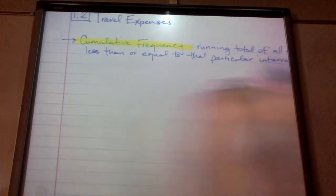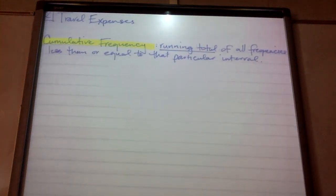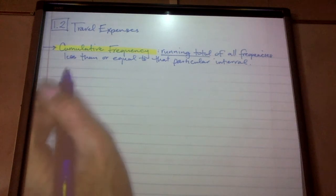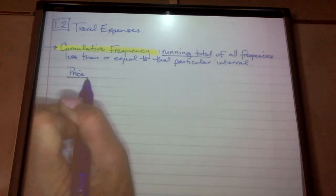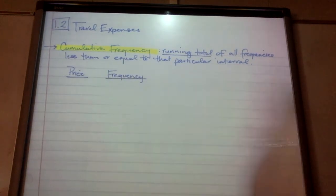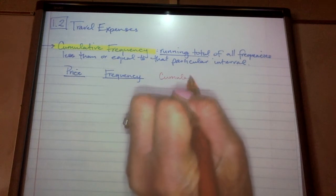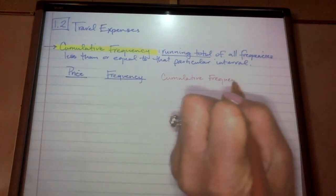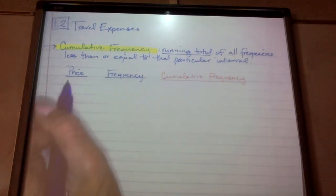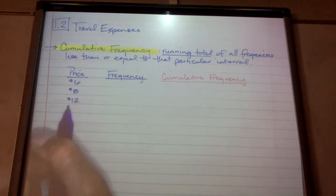That's kind of the fancy definition, but I think you should pay attention to the word running total because we are going to be basically adding things as we go in a table. So I'm going to give you an example. For example, let's say I had the price of certain items in my store. Frequency would be like how many people purchased that item. And then this new term that we're introducing, cumulative frequency. So let's say I had the price of the following items. I had a $6 item, $8, let's say I'm dealing with plants, a $12 plant, a $16 plant.